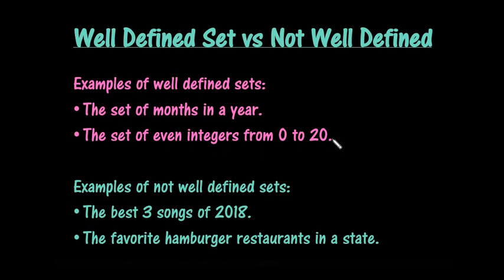The set of even integers from 0 to 20 — we could clearly write out 0, 2, 4, 6, 8, 10, all the way up to 20. So these are what are known as a well-defined set. If it's something that you can easily see that anybody looking at it could come up with a description, then it's a well-defined set.